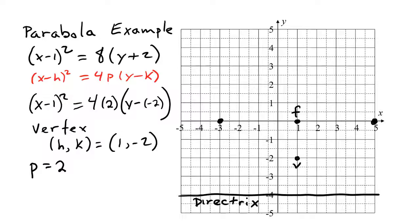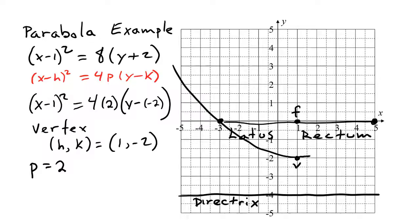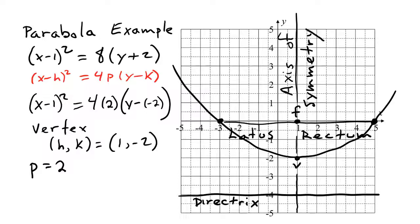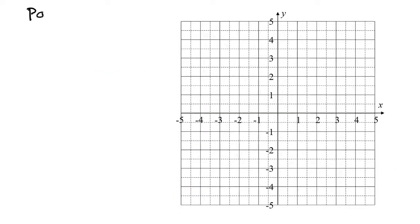That means we go 4 spaces to the left and right of the focus to get the ends of the latus rectum. We draw a parabola through those points, and the last thing to add is the axis of symmetry, which always passes through the focus and the vertex and is perpendicular to the directrix.